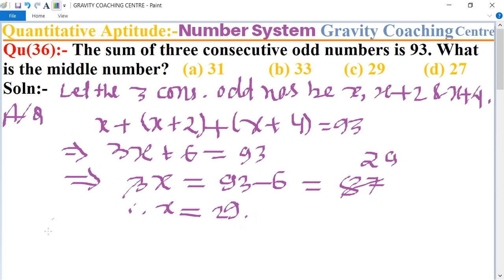29. Hence, the middle number is x+2, so x+2 equals